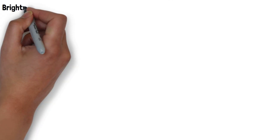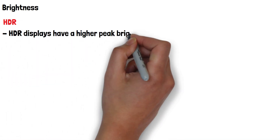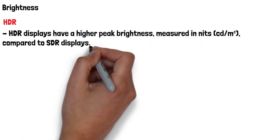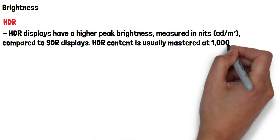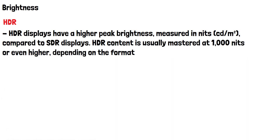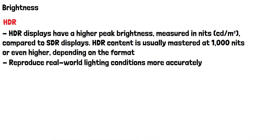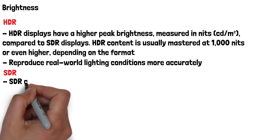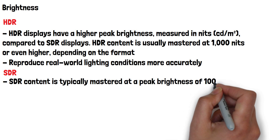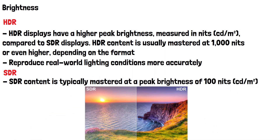Let's start with brightness. HDR displays have a higher peak brightness, measured in nits, compared to SDR displays. HDR content is usually mastered at 1000 nits or higher, depending on the format. This increased peak luminance allows HDR to reproduce real-world lighting conditions more accurately, capturing details in both extremely bright and dark scenes. SDR content is typically mastered at a peak brightness of 100 nits. As a result, SDR displays have a more limited ability to represent scenes with a wide range of color intensities, which can lead to a loss of detail in very bright or dark areas of the image.